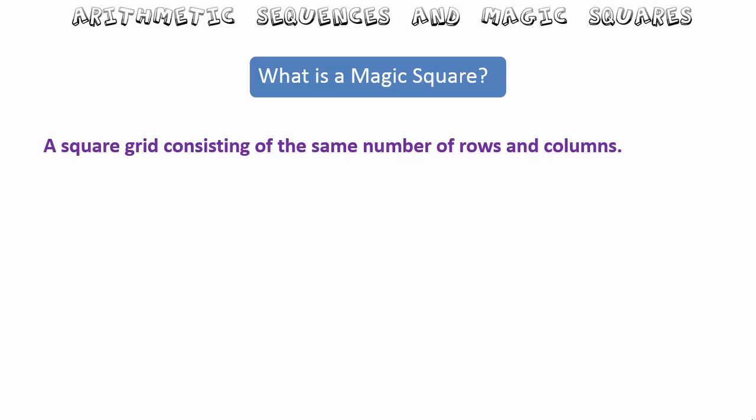Welcome to this video on magic squares. First of all, what is a magic square? You've probably spent many a pastime in the classroom or at home looking at magic squares, but what are they and how do you create them? A magic square is nothing more than a square grid of numbers, and the grid is made up of rows and columns.